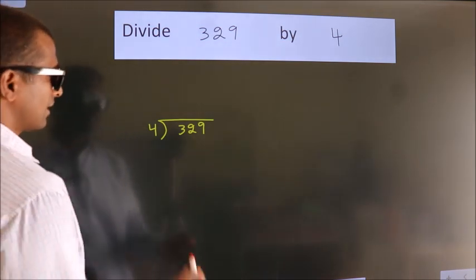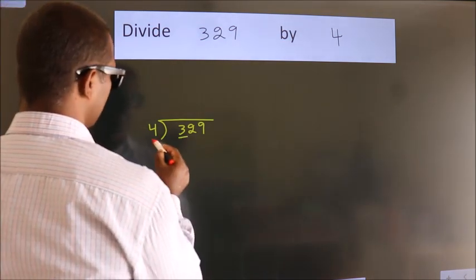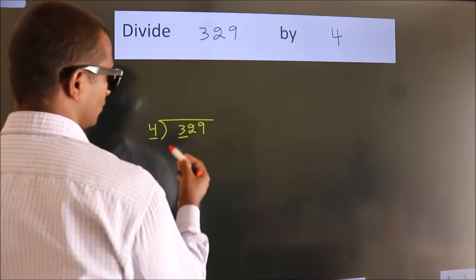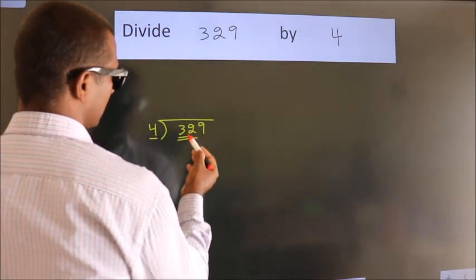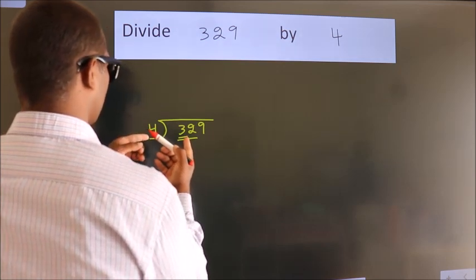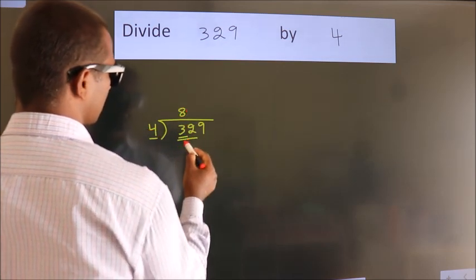Next, here we have 3, here 4. 3 is smaller than 4. So, we should take 2 numbers: 32. When do we get 32? In the 4 table. 4 eights, 32.